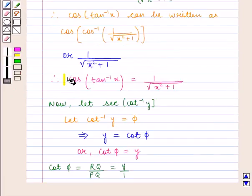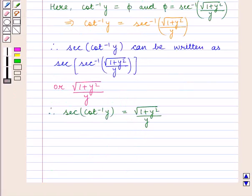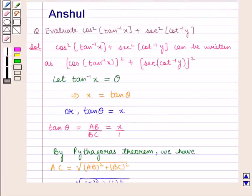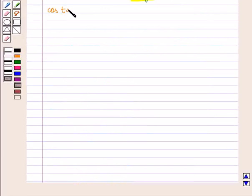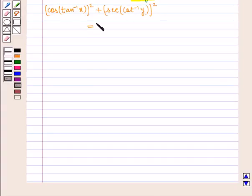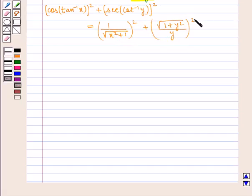Now we have cos of tan inverse of x equal to 1 upon square root of x squared plus 1, and sec of cot inverse of y equal to square root of 1 plus y squared upon y. Substituting these two values in the given expression, we get: cos of tan inverse of x, the whole squared, plus sec of cot inverse of y, the whole squared, is equal to 1 upon square root of x squared plus 1, the whole squared, plus square root of 1 plus y squared by y, the whole squared. This equals 1 upon x squared plus 1, plus 1 plus y squared upon y squared.